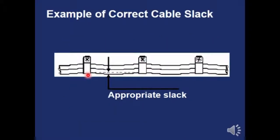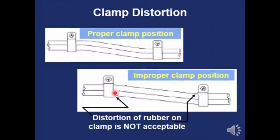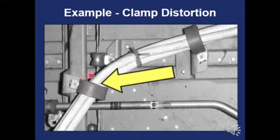Clamps should be 24 inches apart with sufficient slack — wires shouldn't be tightly strapped. Make sure clamps are properly positioned with no distortion of the rubber; if the rubber is distorted, reinstall the clamp properly. Also be mindful of clamp orientation — you want a straight T where they cross. If the T has a wobble or the clamp isn't installed straight, you'll have potential pressure and chafing problems.